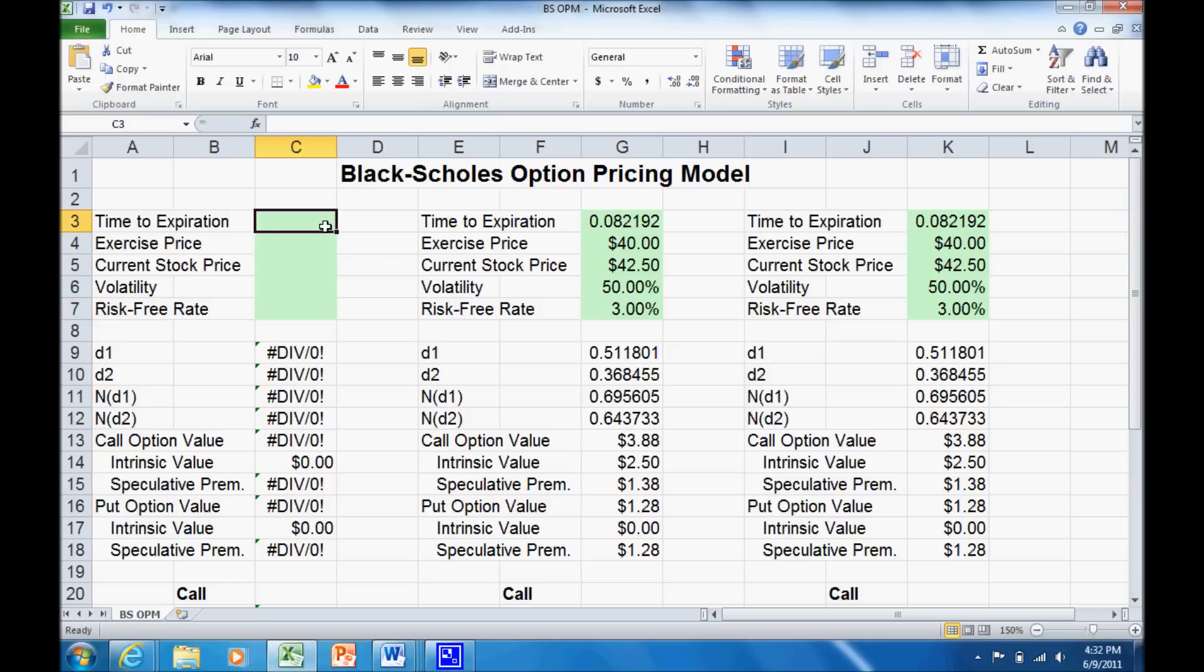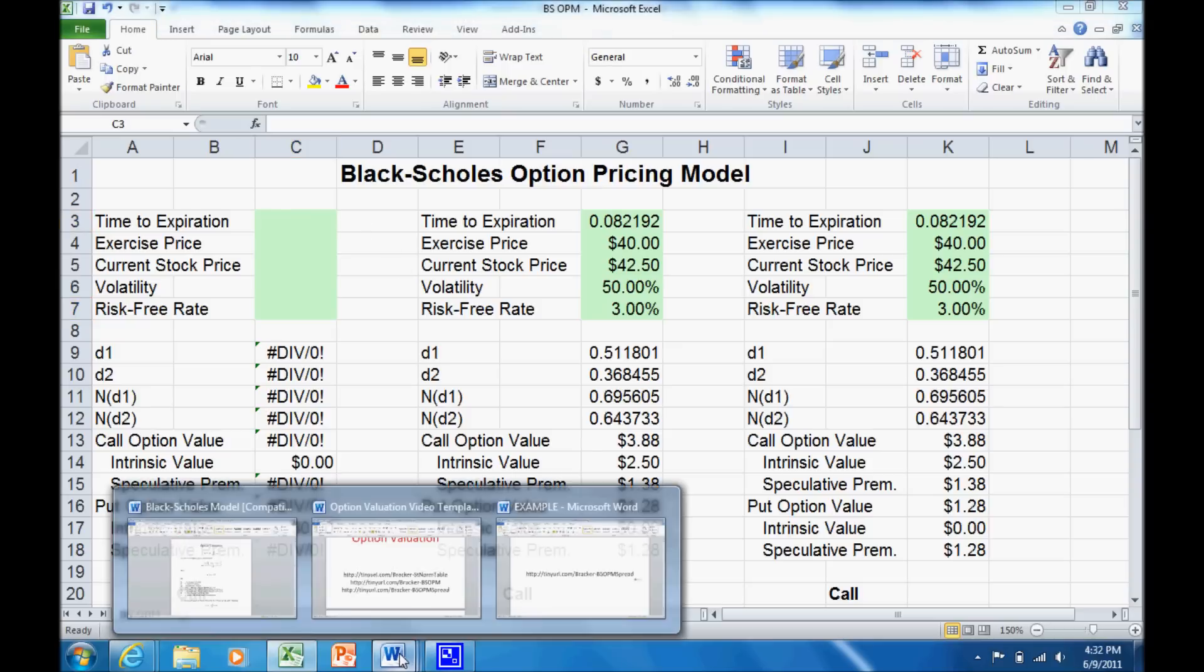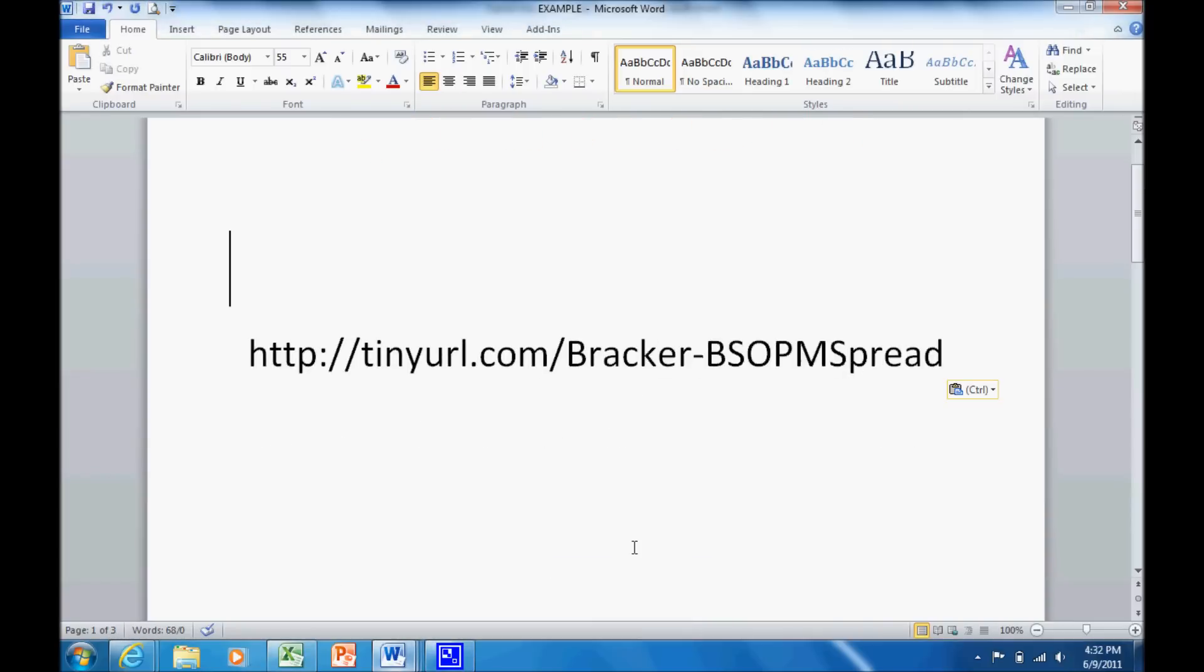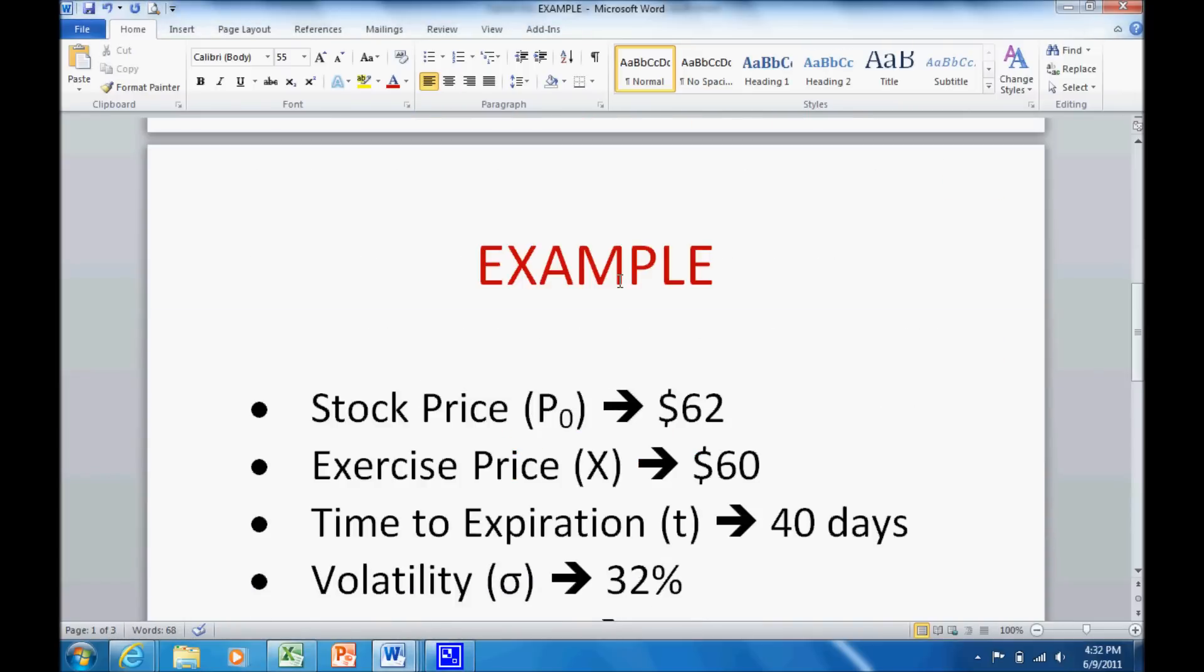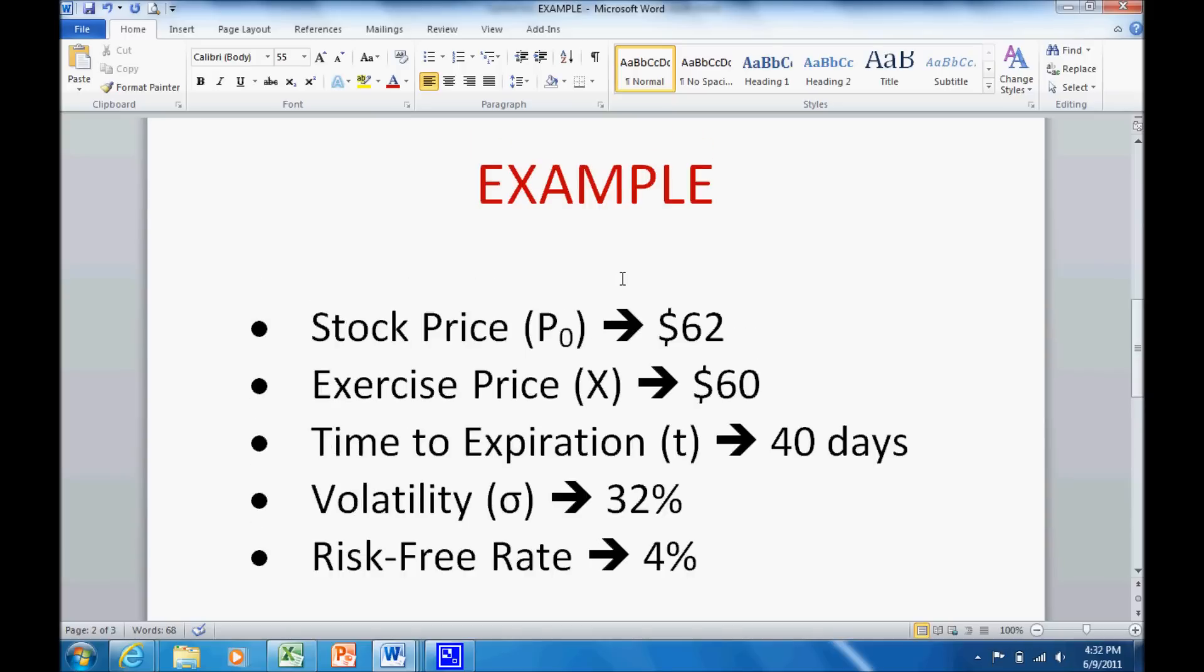We're just going to go ahead and clear those out right now so we can go through an example. The example we're going to start out with has a stock price of $62, exercise or strike price of $60, the option has 40 days to expiration, 32% volatility—that's our forecast of how much the stock is going to bounce around on an annualized basis—and the risk-free rate is 4%.